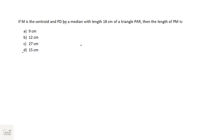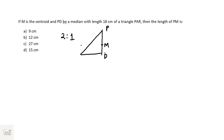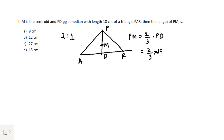One more from geometry. If M is the centroid and PD is the median of triangle PAR with length 18 cm, find the length of PM. The centroid divides the median in the ratio 2:1 from the vertex. So PM = (2/3) × 18 = 12 centimeters. Answer: option B, 12 cm.